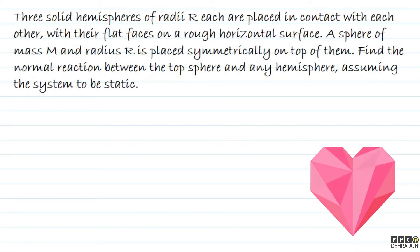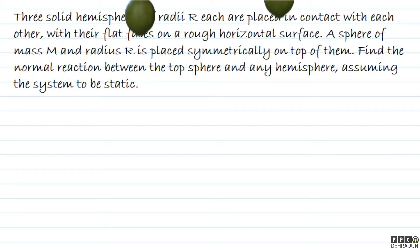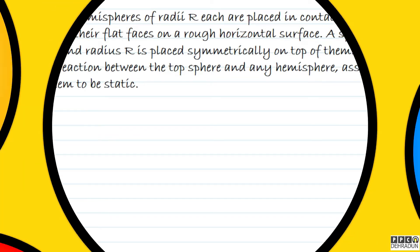Let's have a look at this beautiful problem. The question says: three solid hemispheres of radii R each are placed in contact with each other, with their flat faces on a rough horizontal surface. A sphere of mass M and radius R is placed symmetrically on top of them. Find the normal reaction between the top sphere and any hemisphere, assuming the system to be static.